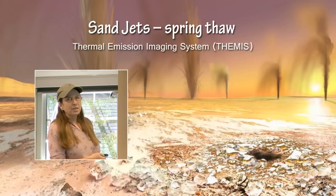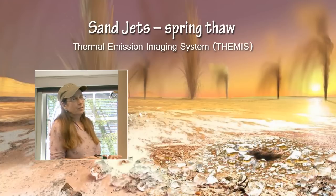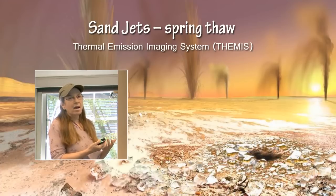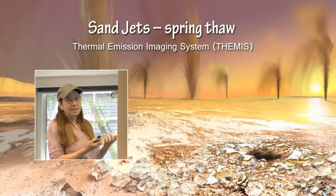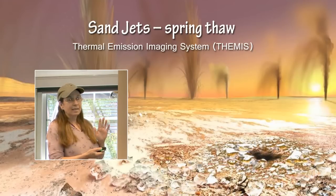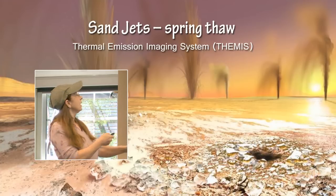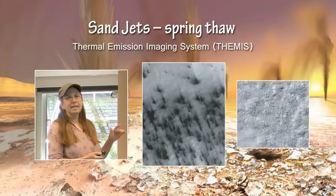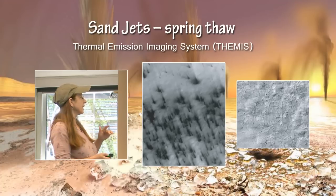During the spring thaw, the carbon dioxide sublimates underneath the surface and produces a geyser that erupts from the surface of the planet, bringing up rock, debris, and dust with it as the carbon dioxide sublimates into the atmosphere. The dirt and dust that came up with it forms a plume that then drifts over the surface of the planet. You can look at the length and direction of those plumes to tell you the velocity and direction of the winds at that point in time.